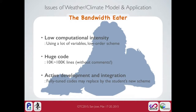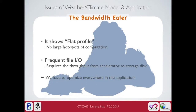The model is still actively under development and integration, so fully-tuned code may be replaced by students with a new scheme within two years, so we have to tune more and more. The weather climate model shows a flat profile — a flat profile means no large hotspots of computation. A notable feature of our model is frequent file I/O, which requires throughput from the accelerator to storage disk. So we have to optimize everywhere in the application if we use the GPU.